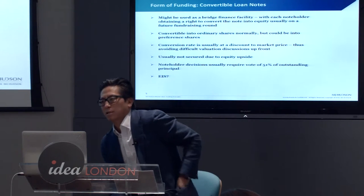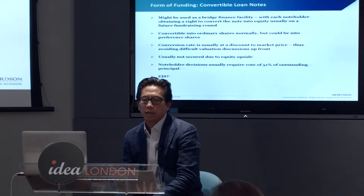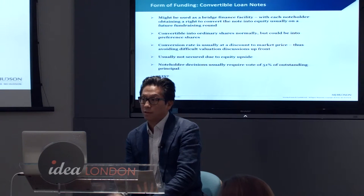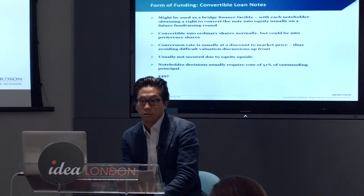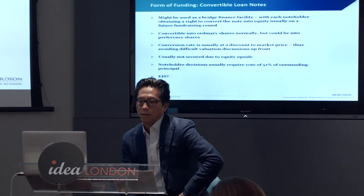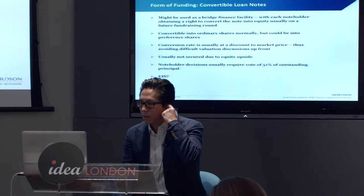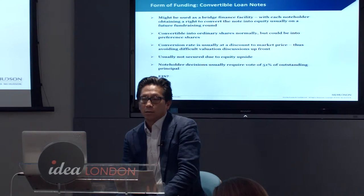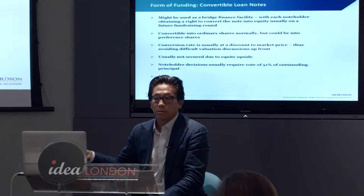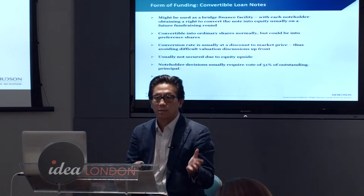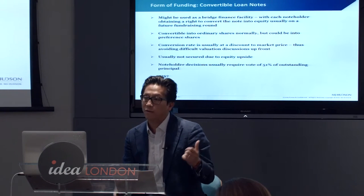The SAFE is Y Combinator's version of a very short-form convertible — it's basically about four or five pages. We actually used one about two years ago for a South African business brought into the UK, converting it into a UK law document. It works — but the big issue is the SAFE is not an EIS-able instrument. So SEIS and EIS investors in the UK will not go for the SAFE. However, it's not to say you can't take something like the SAFE and make it into a document that could qualify for that purpose.